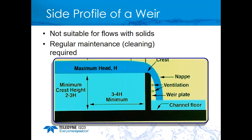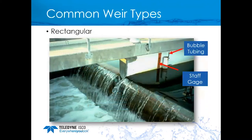Here is an example of a rectangular weir using bubbler technology to read the level — an ultrasonic sensor could also be used. If a staff gauge is present, it makes on-site calibration easier. Without a staff gauge, one approach is to stop the flow and set the level to zero when the water equals the top of the crest.